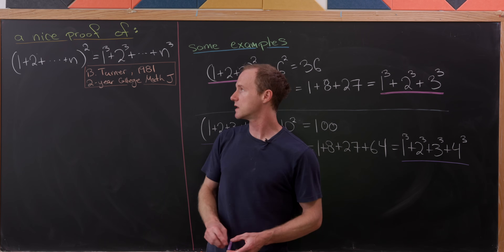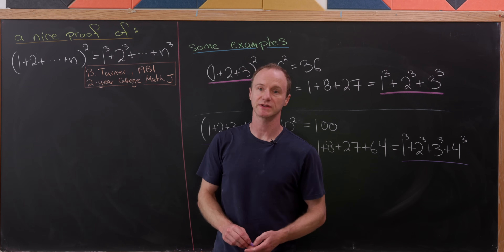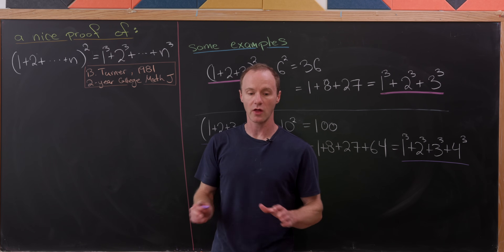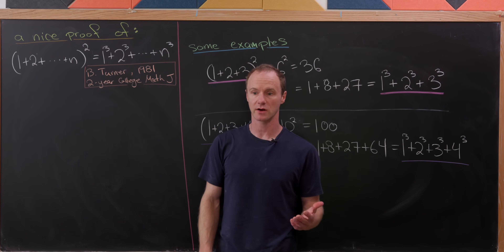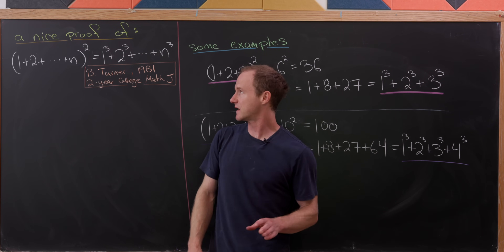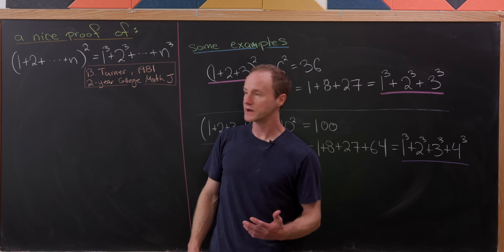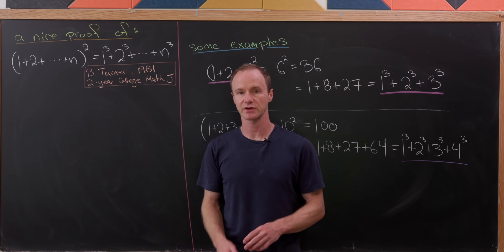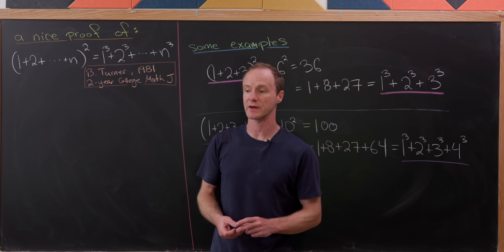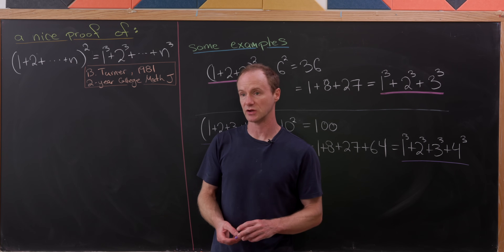That identity is that one plus two plus three all the way up to n, squared, is the same thing as one cubed plus two cubed plus three cubed all the way up to n cubed.